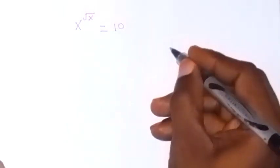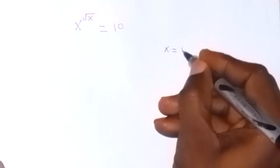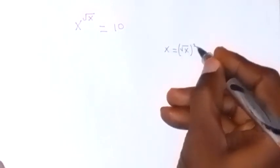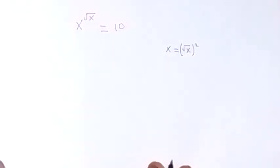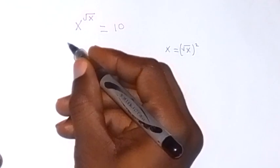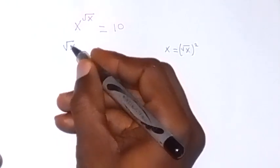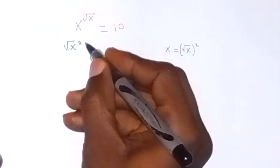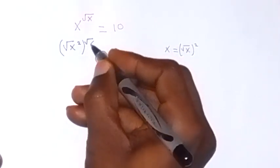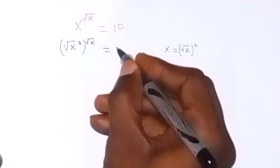We can write x as root x squared. So when we write x as root x squared, we can replace it here now. And this will become root x squared, then raise to power root x equals to 10.